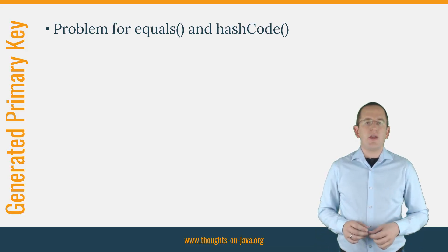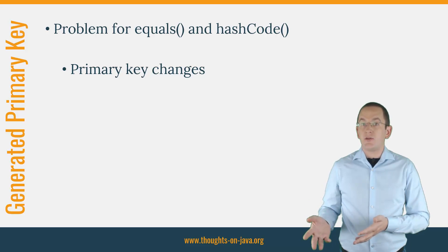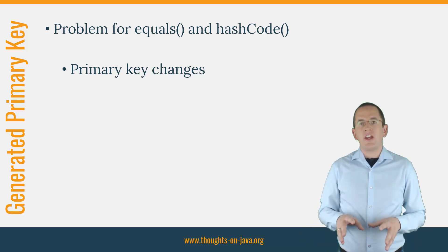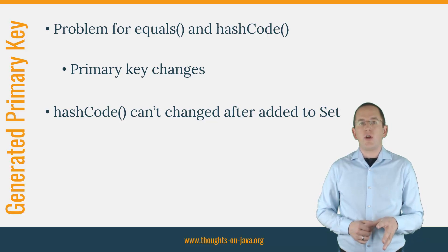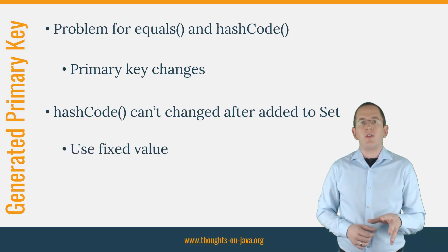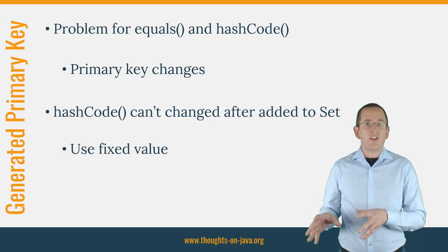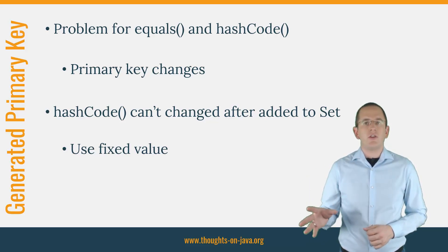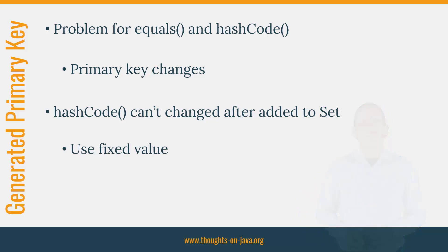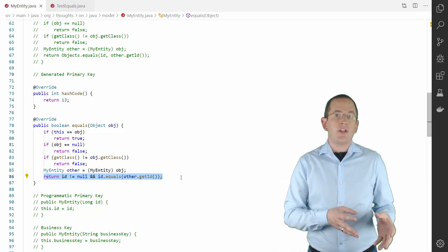Generated primary keys create a problem for the implementation of your equals and hashcode methods, because the primary key value gets set when the entity gets persisted. So your entity object can exist with and without a primary key value. The challenge here is that the hashcode of your entity isn't allowed to change after you added the object to a set, so you can't use the primary key to calculate the hashcode. You need to return a fixed value that's the same for all objects of the entity class. That negatively affects the performance of very large sets and maps because they put all objects into the same hash bucket, but Hibernate can't efficiently manage huge associations anyway and you should avoid them in general. Here you can see an implementation that uses the primary key value in the equals method and returns a fixed value as the hashcode.